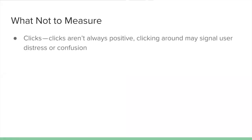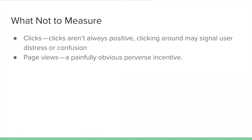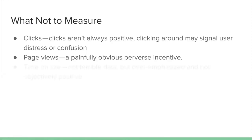What should you not measure? Clicks — clicks aren't always positive. Sometimes clicking around signals user distress or confusion. Many A/B testing and analytics solutions give you clicks as a top-level metric, so a note of caution there. Page views: think about those sites with 15 different slides where you keep clicking to advance — that's designed to drive ad impressions. Time on site isn't terrible data, but similarly, people prioritize it because it's easy to measure. It's not objectively positive — time on site could simply mean the person walked away and left their computer idle.